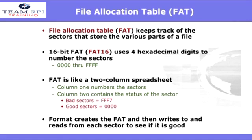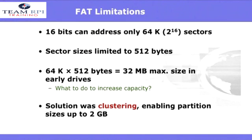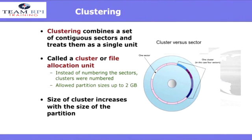FAT, or the file allocation table, keeps track of the sectors that store various parts of a file. It was referred to as FAT16 because it was configured to operate 16 bits at a time. Some key limitations of FAT are that 16 bits can address only 64 kilobytes in sectors, so sector sizes were limited to 512 bytes. To overcome this, we use clustering. That enables the partition sizes to go up to at least 2 gigs. Clustering combines a set of contiguous sectors and treats them as a single unit, called a cluster or file allocation unit.